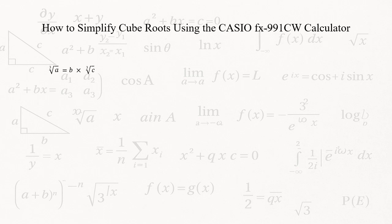Hey everyone, today I'll show you how to simplify cube roots like the cube root of a number A into the form B times the cube root of C using the prime factorization feature on the Casio FX-991CW calculator. Let's get started.